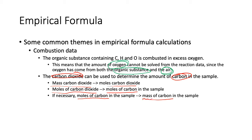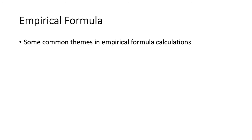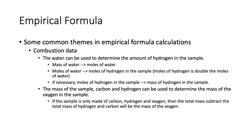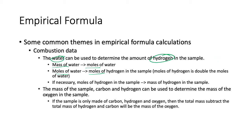We take the moles of carbon and work out the mass of carbon in the sample, then use that to get the oxygen at the end by mass subtraction — total mass minus mass of carbon minus mass of hydrogen gives mass of oxygen. Water gives you the amount of hydrogen: mass of H₂O → moles of H₂O → moles of H, and remember, because water is H₂O, the moles of H equals moles of H₂O times 2. So one mole of water gives two moles of hydrogen atoms.